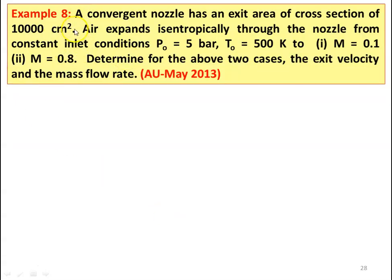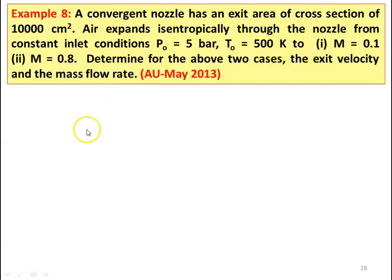Example number 8. A convergent nozzle has an exit area of 10,000 centimeter square. Air expands isentropically through the nozzle from constant inlet conditions: stagnation pressure PO equal to 5 bar and stagnation temperature 500 Kelvin. Two cases: case 1, exit Mach number is 0.1; case 2, exit Mach number is 0.8. Determine in both cases the exit velocity and the mass flow rate. This is from May 2013 question paper.